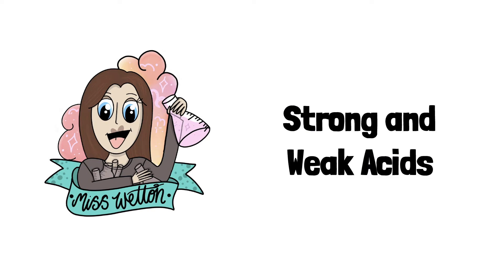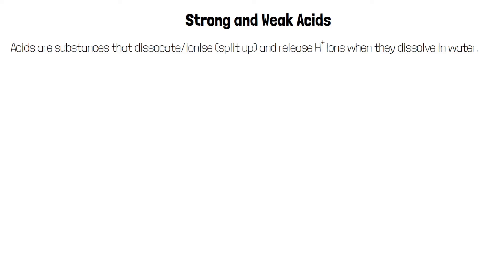In this video, we'll look at the difference between strong and weak acids. Acids are substances that dissociate or ionise, which means they split up, so they release hydrogen ions when they dissolve in water.